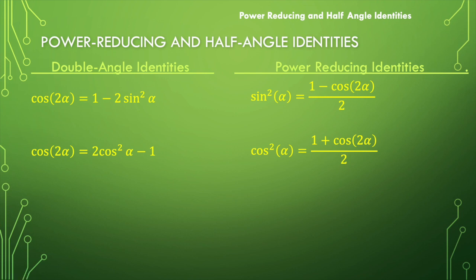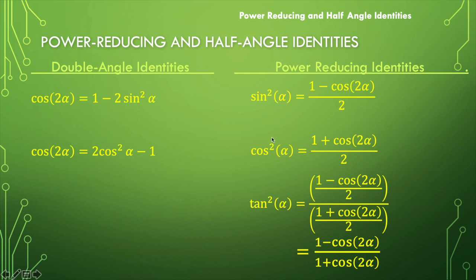To get tangent squared of alpha, we're not going to use those formulas — we're going to use what we know about the tangent of an angle being equivalent to the sine of that angle divided by its cosine. So I can take these two functions — sine squared and cosine squared of alpha — and divide them. I have 1 minus cosine of 2 alpha over 2 in the numerator and 1 plus cosine of 2 alpha over 2 in the denominator. Since they're both divided by 2, I can multiply both numerator and denominator by 2, and those minor denominators divide away. We end up with 1 minus cosine of 2 alpha over 1 plus cosine of 2 alpha.